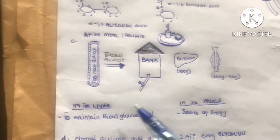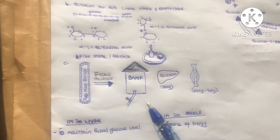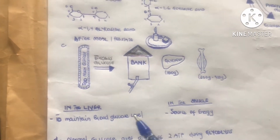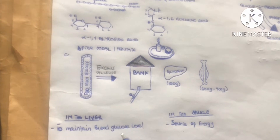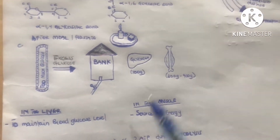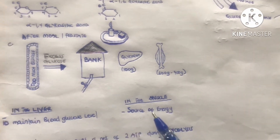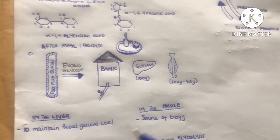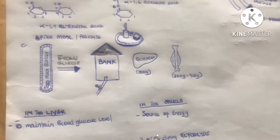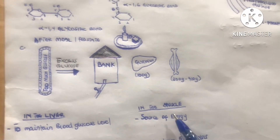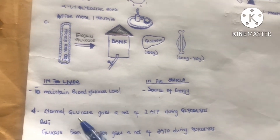These two banks — the liver and the muscle — have different purposes for storing glucose as glycogen. In the liver, the purpose is to maintain blood glucose levels in the future during a hypoglycemic state. In the muscle, the skeletal muscles store glycogen to serve as a source of energy in the form of ATP when the body needs it.